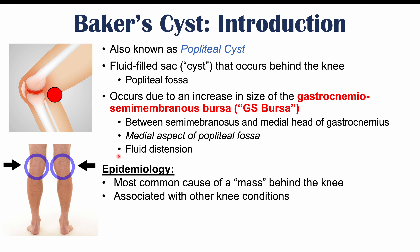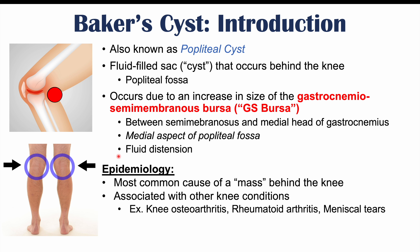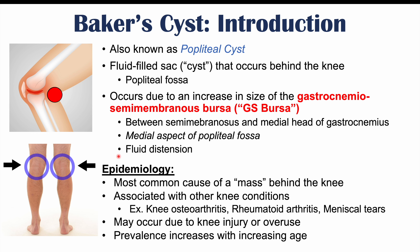Baker's cysts are the most common cause of a mass behind the knee. They are associated with other knee conditions, including knee osteoarthritis, rheumatoid arthritis, and meniscal tears. A Baker's cyst may also occur due to knee injury or overuse. Essentially anything that causes injury or damage to the knee and knee structures can increase the risk of getting a Baker's cyst.